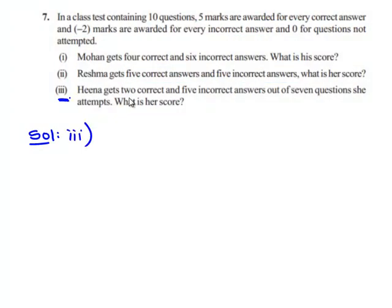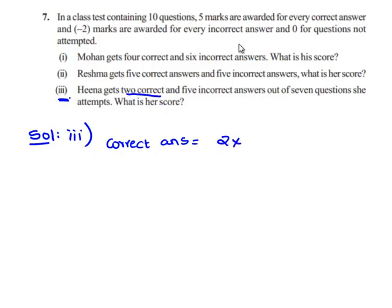We'll see the third part. Hina gets 2 correct and 5 incorrect answers out of 7 questions she attempts. What is her total score? First, we'll compute Hina's score for correct answers. She gets 2 correct answers and 5 marks are awarded for every correct answer. Therefore, 2 × 5 gives +10.